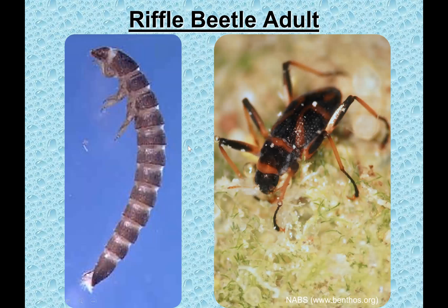Riffle beetles are another sensitive indicator. As adults they look like small ticks — blown up here, but small in real life. We call them riffle beetles because they prefer fast-running whitewater riffle areas where we sample. Good water quality typically means quite a few riffle beetles. Don't be fooled though — there's also a larval form with a very hard exoskeleton and six legs. We still categorize those as riffle beetles. People sometimes confuse them with caddisflies, but they are riffle beetles.